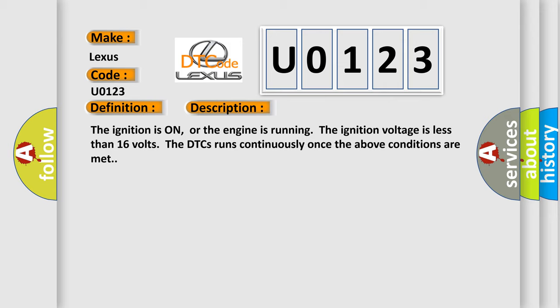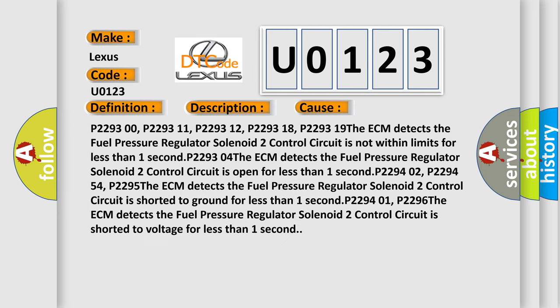This diagnostic error occurs most often in these cases. P229300, P229311, P229312, P229318, P229319: the ECM detects the fuel pressure regulator solenoid 2 control circuit is not within limits for less than one second. P229400: the ECM detects the fuel pressure regulator solenoid 2 control circuit is shorted to ground for less than one second.